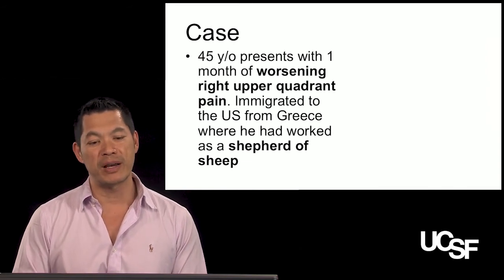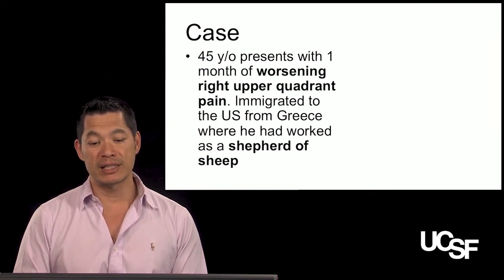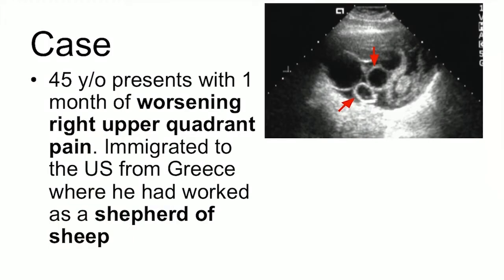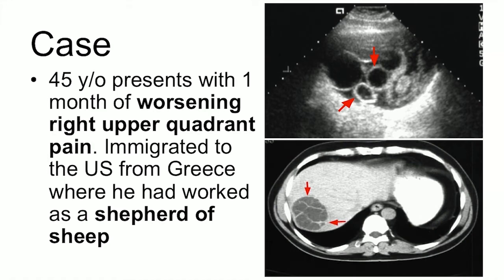A 45-year-old man presents with one month of worsening right upper quadrant pain; he immigrated from Greece where he worked as a shepherd of sheep. On ultrasound you see huge cysts that look like aliens, taking up almost all of the abdomen. On CT scan of the liver you find massively cystic areas taking up a lot of space in the organ.